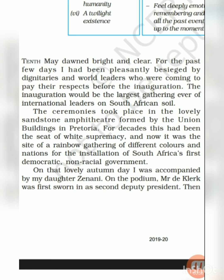The inauguration took place on 10th May — summertime — yet it is described as a lovely autumn day. Both literally and symbolically, in autumn trees shed old and rotten leaves and new leaves with fresh colors are born. Symbolically, the old rotten system of apartheid was coming to an end and a new republic based on equality of men, color and races was taking birth.